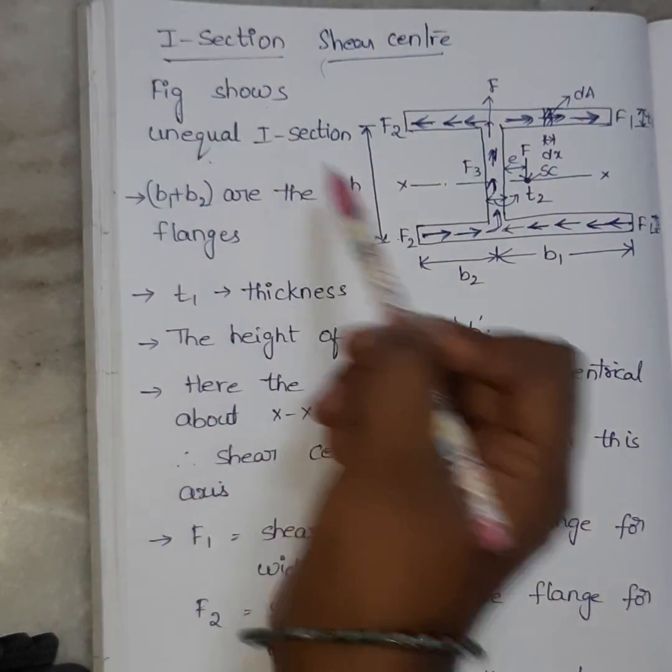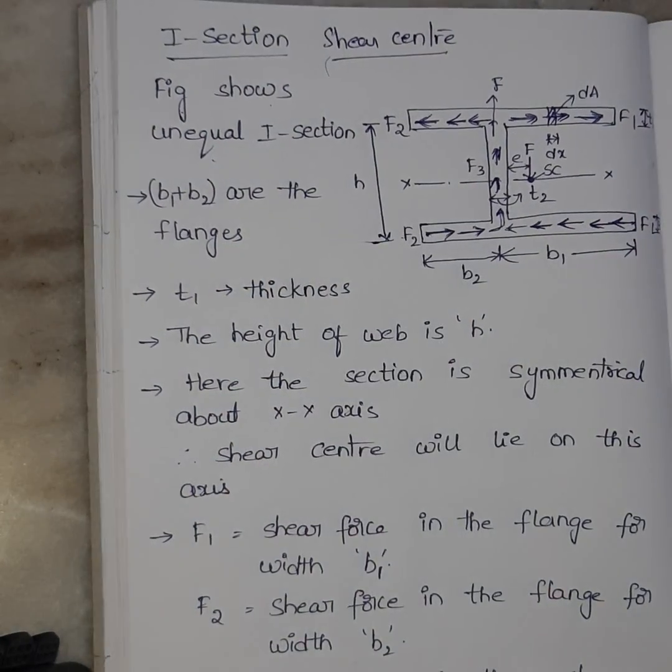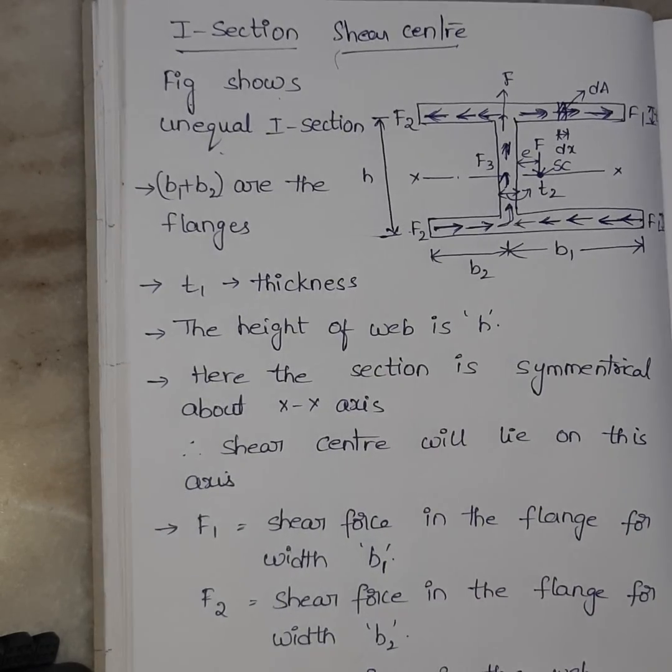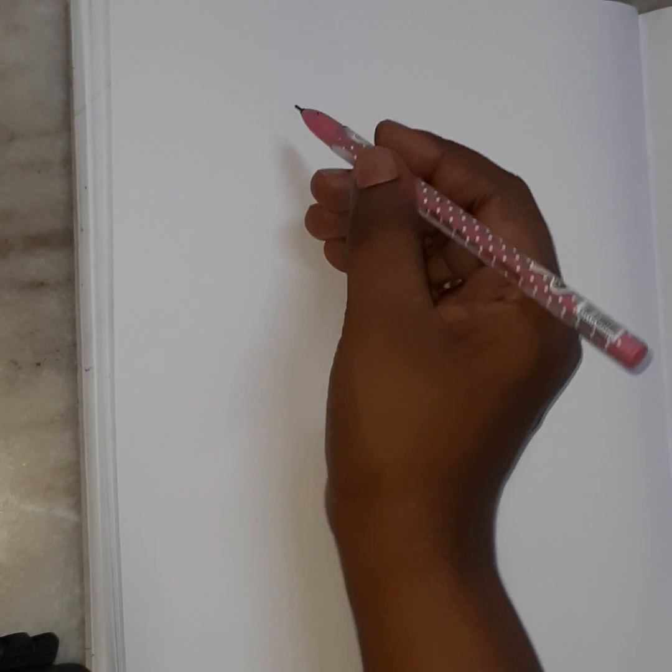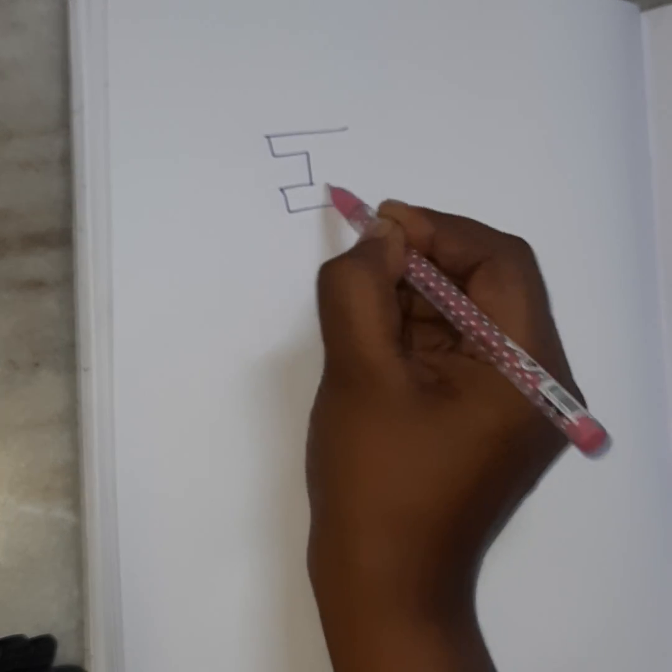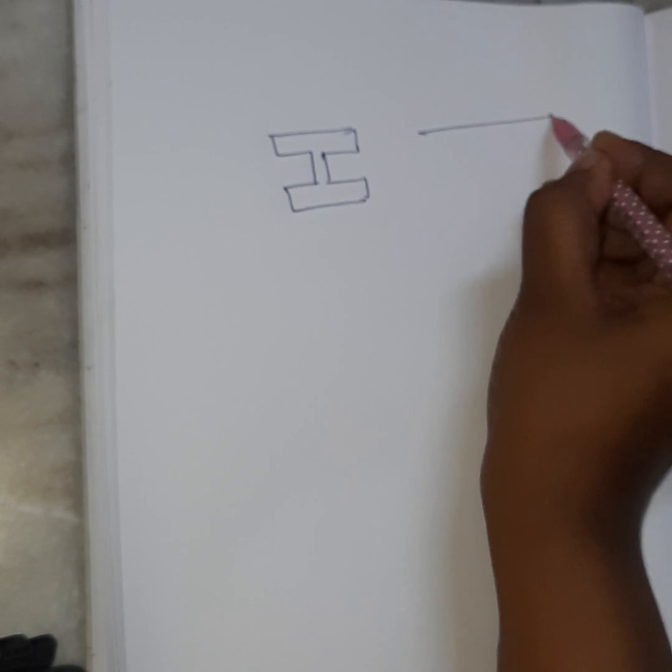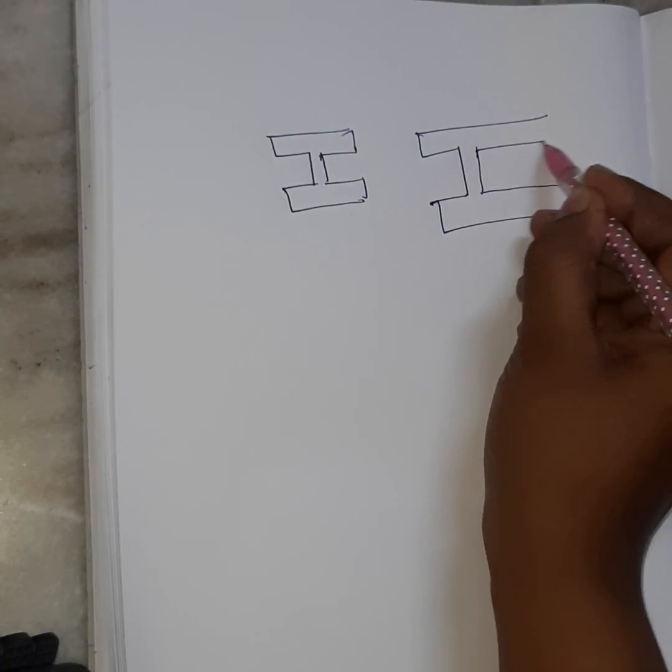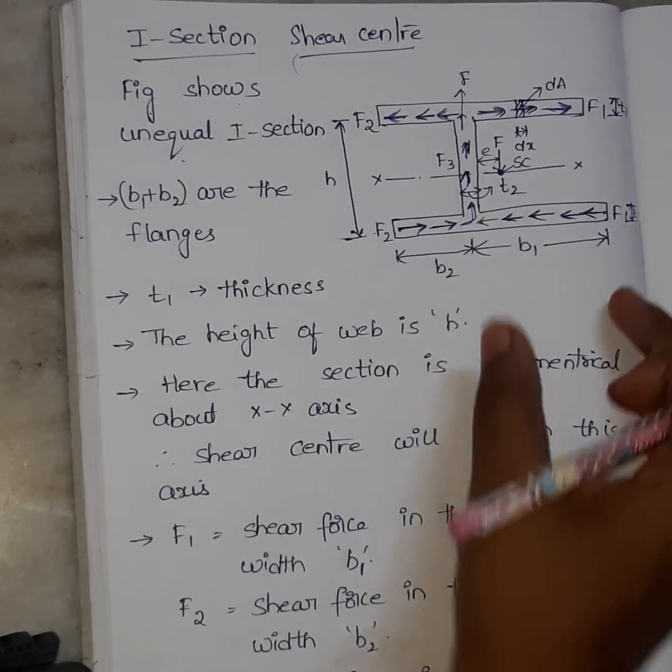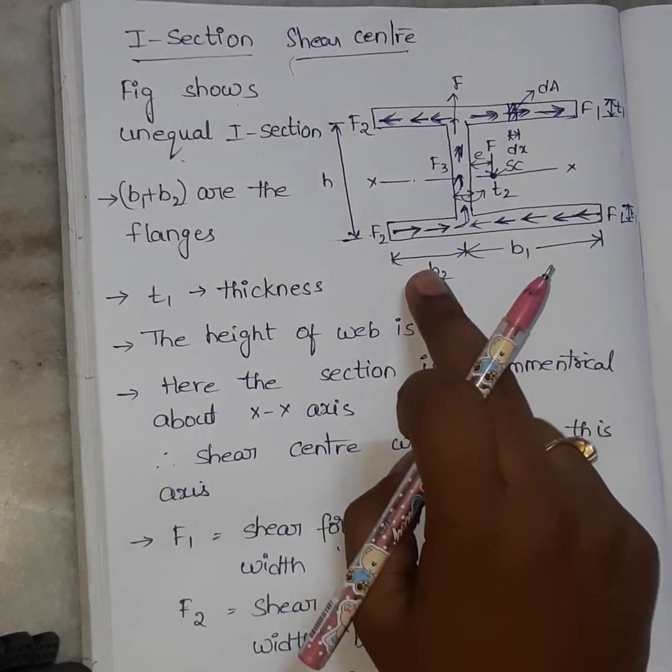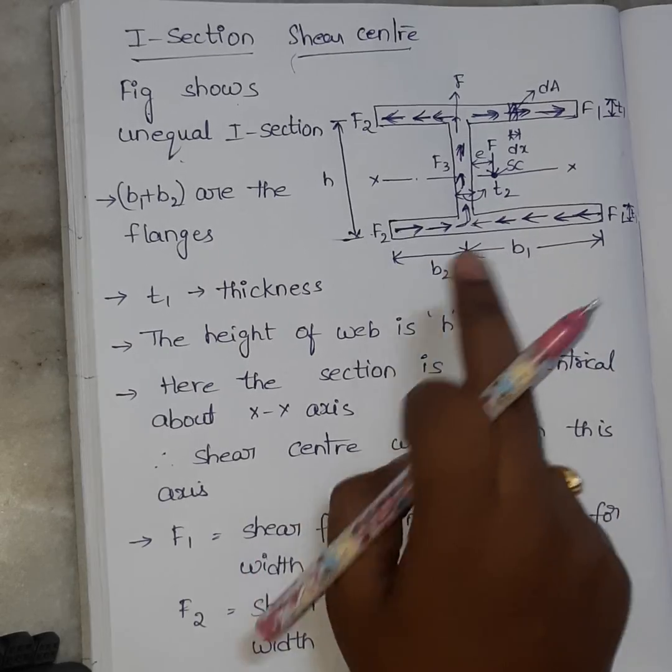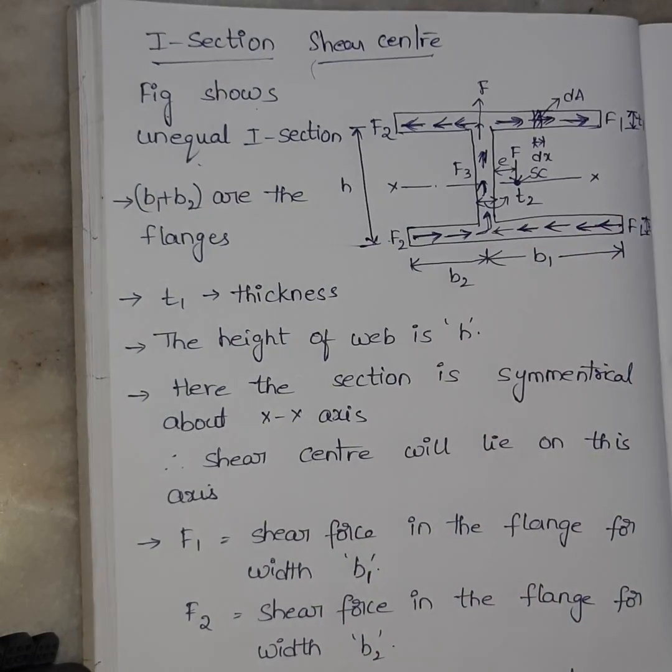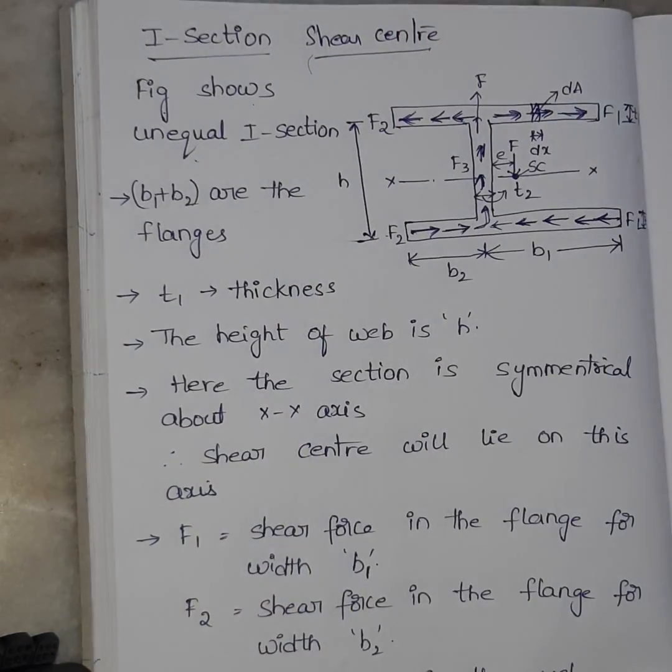See here, figure shows an unequal I-section. So unequal I-section means it is not equal. These both sides are not equal. The section is unequal. So the section is like this. Okay, this is my diagram. The section is unequal.